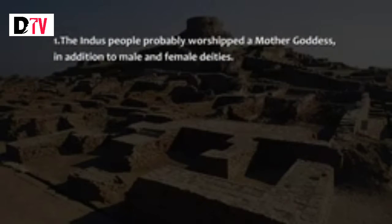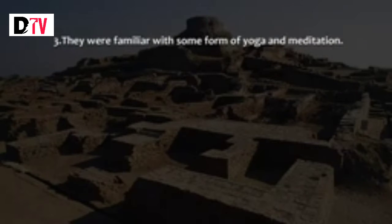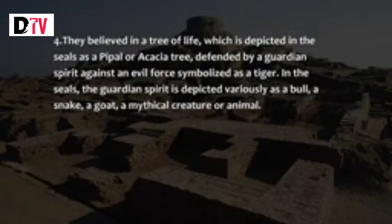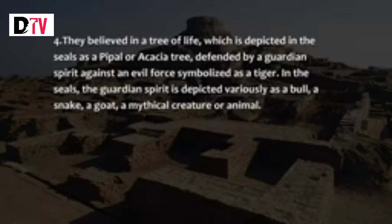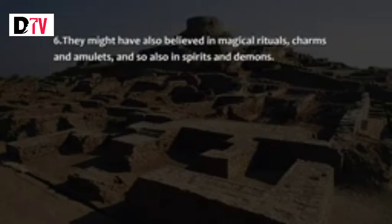Nevertheless, some assumptions about the Indus Valley Civilization religion have been proposed. One: the Indus people probably worshipped a mother goddess in addition to male and female deities. Two: they may have worshipped a father god who might be a progenitor of the race and probably was a prototype of Shiva as the Lord of the Animals. Three: they were familiar with some form of yoga and meditation. Four: they believed in a tree of life, depicted in seals as a pipal or acacia tree defended by a guardian spirit against an evil force symbolized as a tiger, with the guardian spirit depicted variously as a bull, snake, goat, or mythical creature. Five: they worshipped fertility symbols such as round stones and pierced stones.